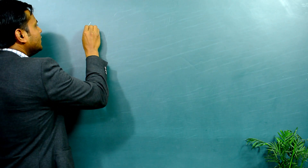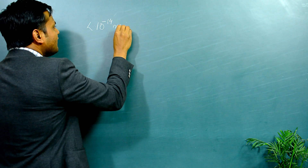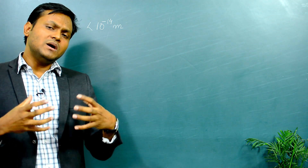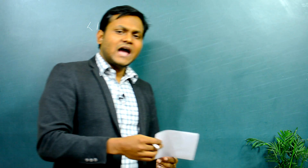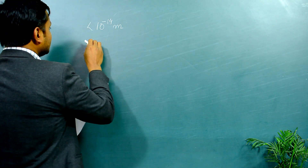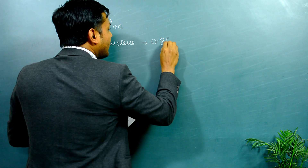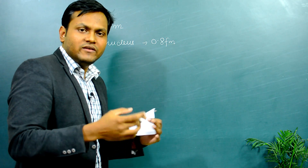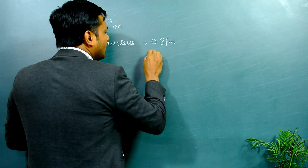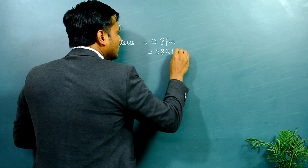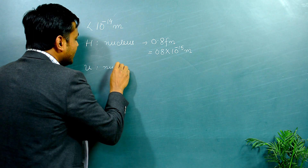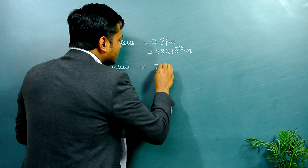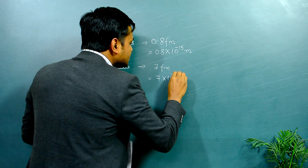According to Rutherford's estimates, the size of the nucleus was smaller than around 10 to the power minus 14 meters. Since then, much more precise methods have been developed. For example, the hydrogen atom has a nucleus with a radius of 0.8 femtometers, and a large atom like uranium has a nuclear radius of around 7 femtometers, which equals 7 × 10⁻¹⁵ meters.